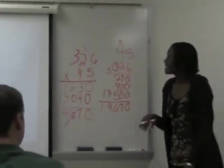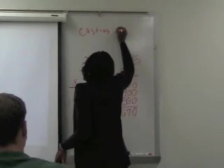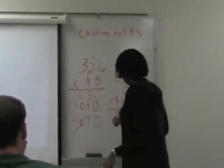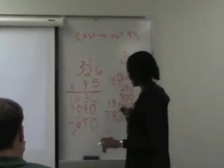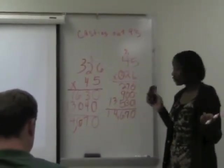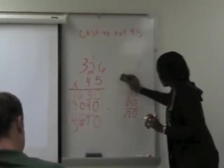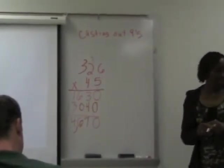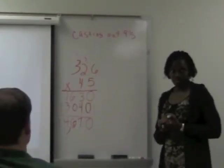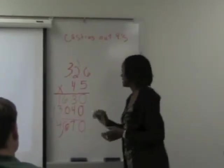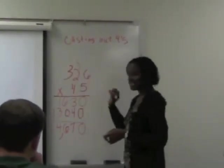Today I want to teach you something called casting out nines. The concept is this: you add all the digits in each of the factors and in the product. For 326: 3 plus 2 plus 6 equals 11. For 45: 4 plus 5 equals 9. For the product 14,670: 1 plus 4 plus 6 plus 7 plus 0 equals 18.